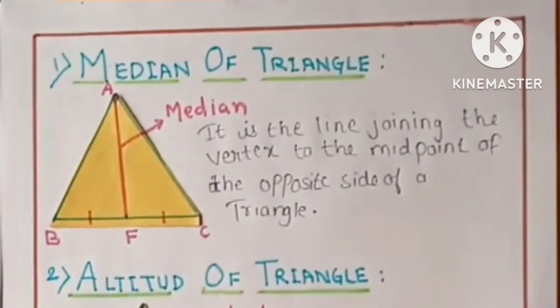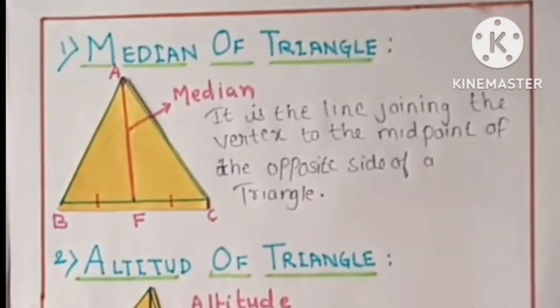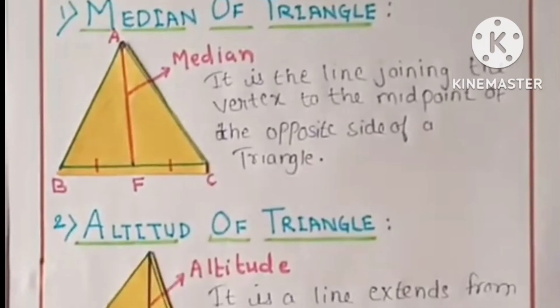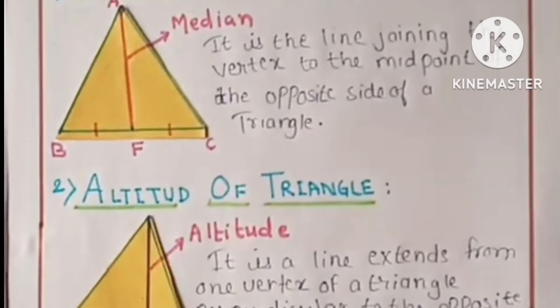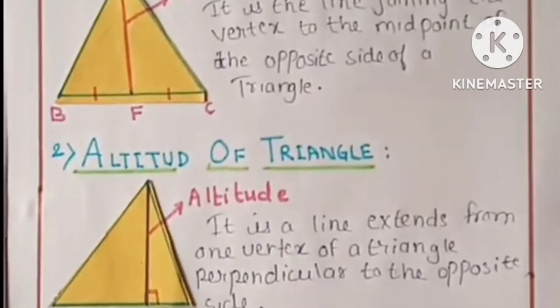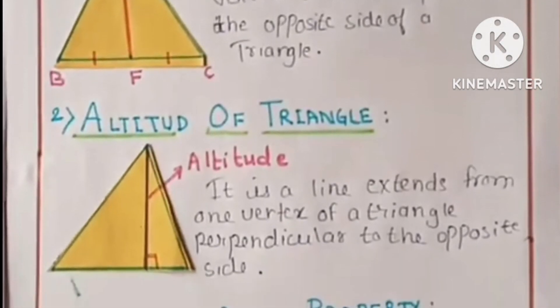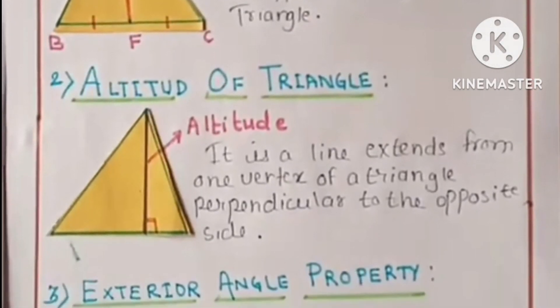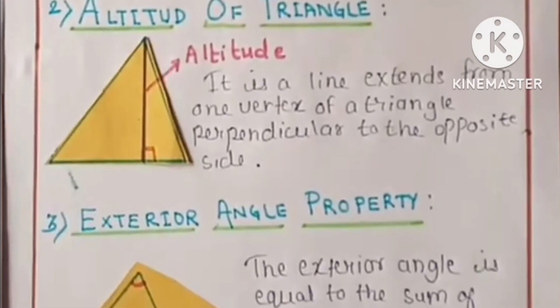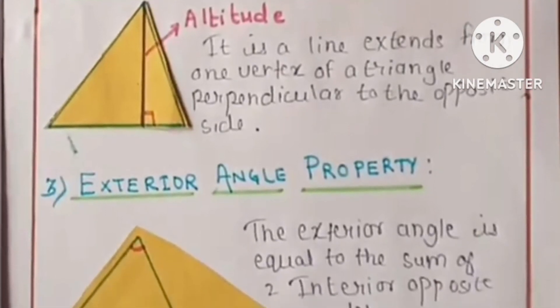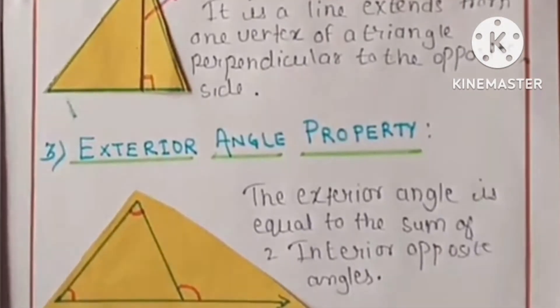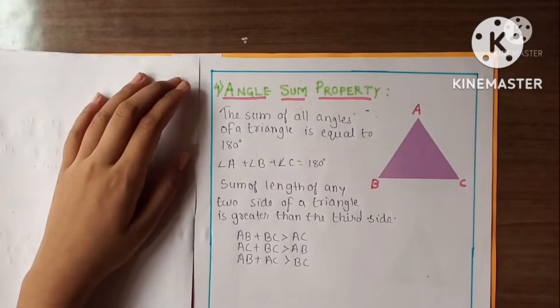On the next page: the first one is median of triangle, second is altitude of triangle, and third is exterior angle property. The fourth one is angle sum property and its information.